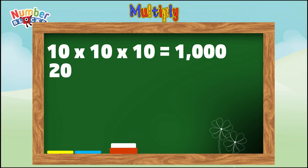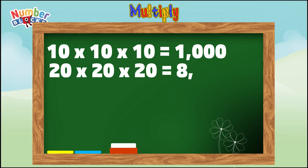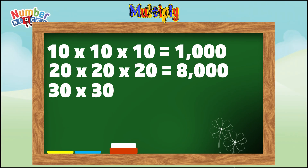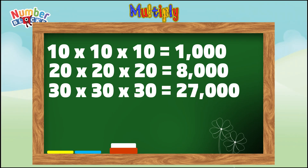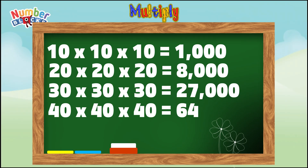Twenty times twenty times twenty equals eight thousand. Thirty times thirty times thirty equals twenty-seven thousand. Forty times forty times forty equals sixty-four thousand.